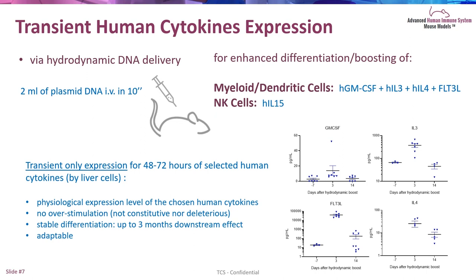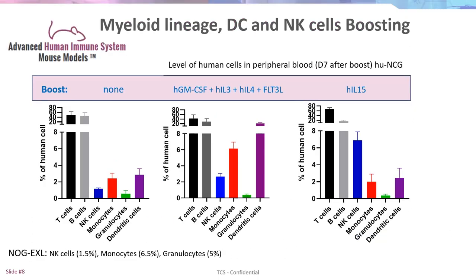This transient expression of cytokines will have a profound and stable impact on the cell lineage you want to boost. Comparing non-boosted animals — where you mostly have T and B cells and very low percentages of NK, monocytes, and dendritic cells — thanks to the boost with different cocktails of cytokines, we can increase the percentages of monocytes and dendritic cells up to 20%, but also the amount of NK cells within the system.